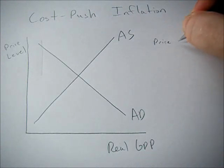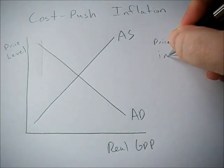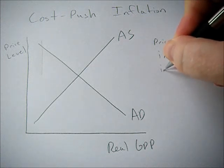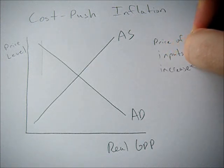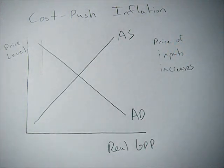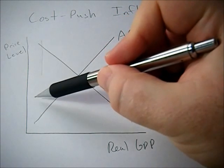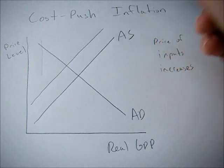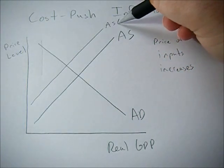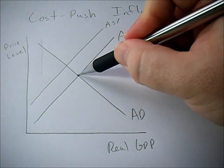Cost push inflation happens when the price of inputs increases. This could be wages increasing — so the cost of labor as an input is rising — or the cost of other inputs like factories, or if you're making movies, DVDs going up, that sort of thing. When the price of an input increases, we see a decrease or a leftward shift in aggregate supply.